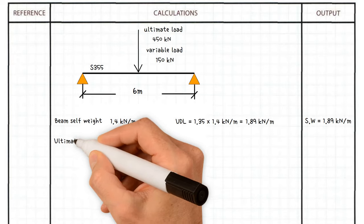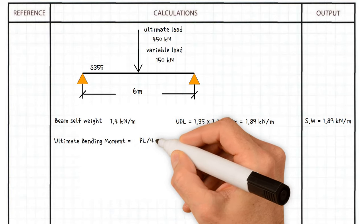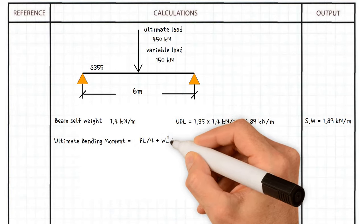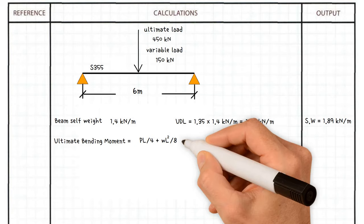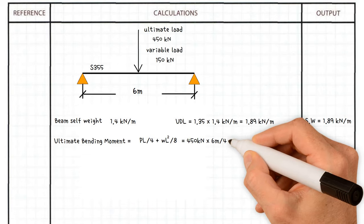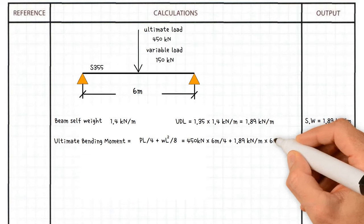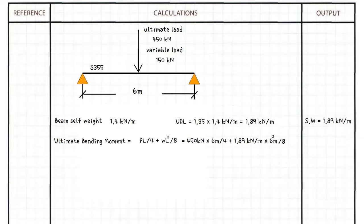Next, we need to find ultimate bending moment, which equals P times L over 4 plus W L squared over 8, which is 450 kilonewtons times 6 meters over 4 plus 1.89 times 6 squared over 8. This results in a value of 683.5 kilonewton meters.